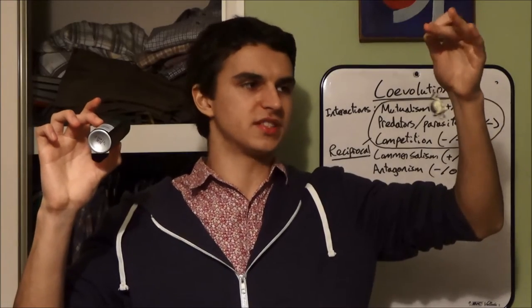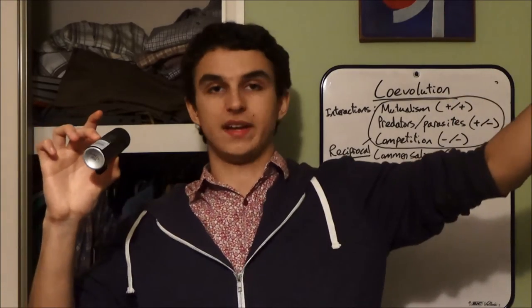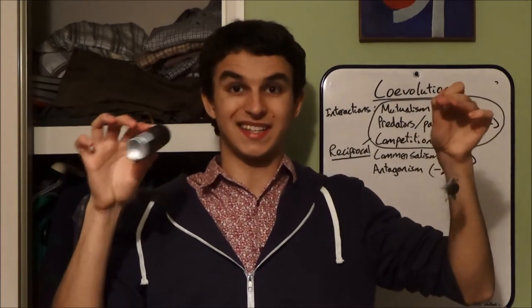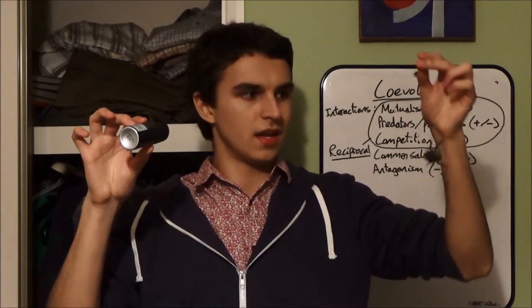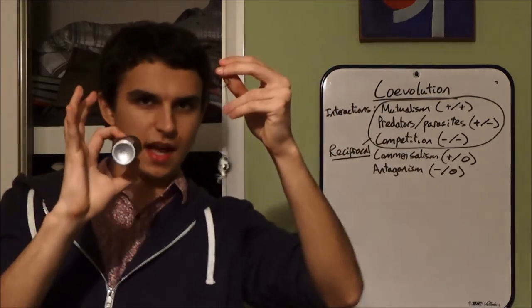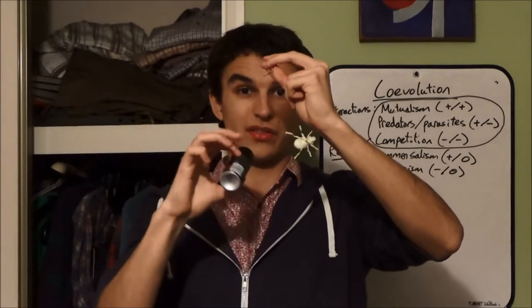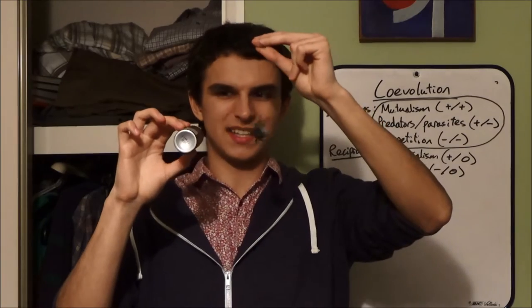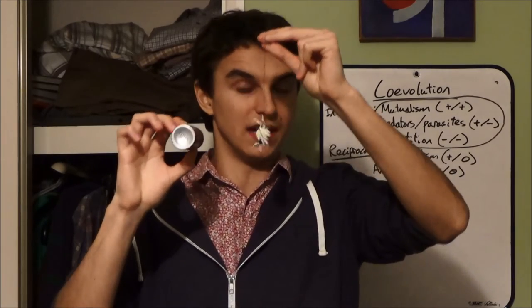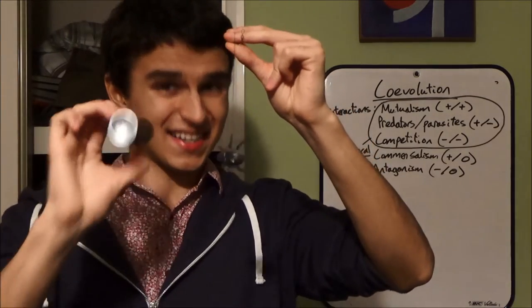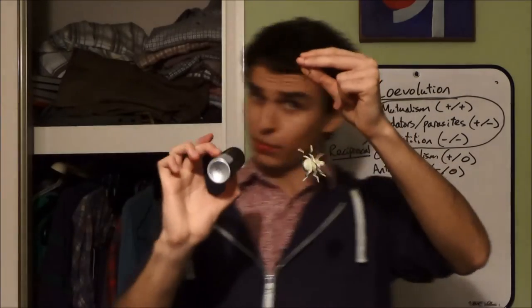So your moth is here and your bat is here. Now the moth has detected these frequencies produced by the bat, but they're kind of very faint. So that gives the idea that the bat is quite far away. So therefore, all the moth needs to do is to fly away. Right, and fly further away from the bat so it doesn't get eaten.